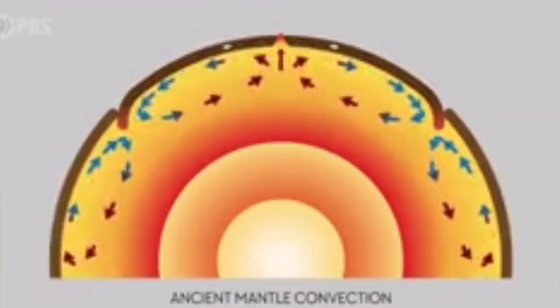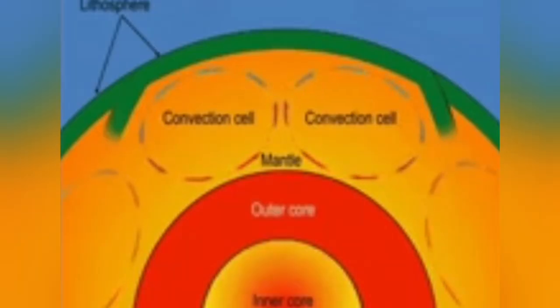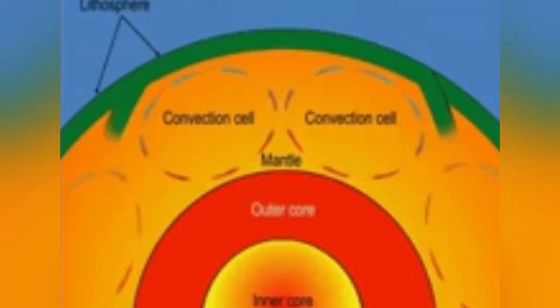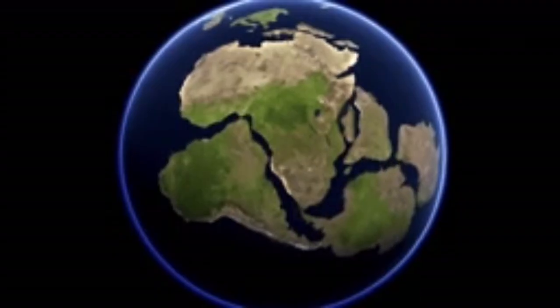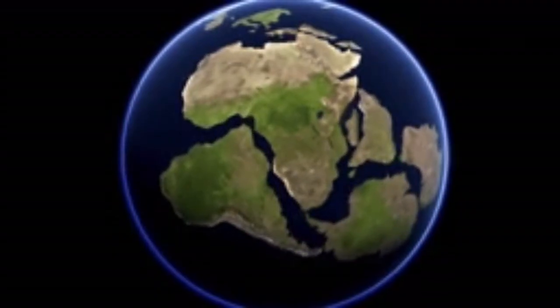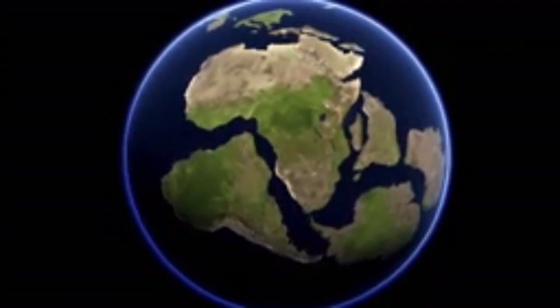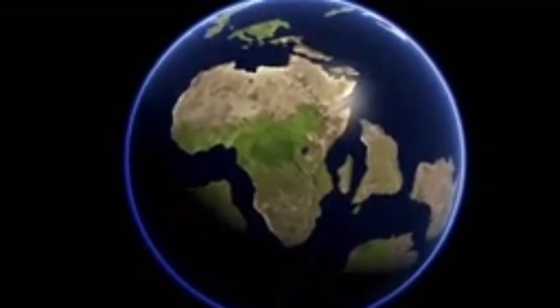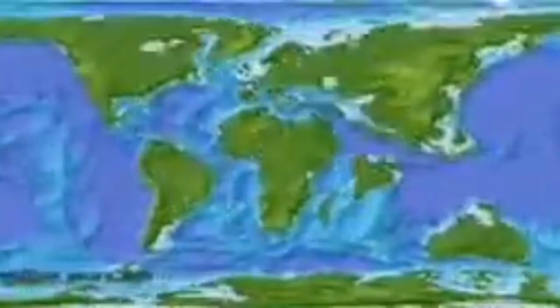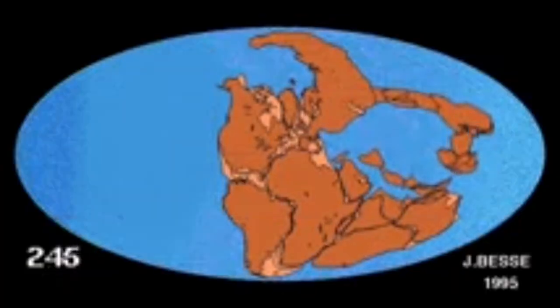The mantle has convection in the case of the Earth, and this convection creates cracks on the surface of the crust, creating what we call continents or plates. These plates move, and they open up and close down oceans.